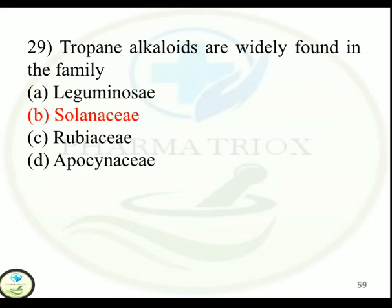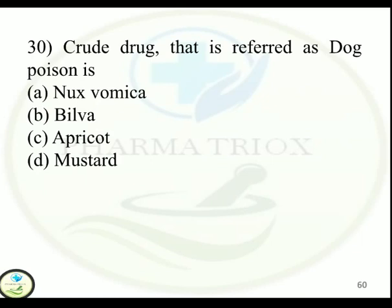Question 30: The crude drug referred to as dog poison is — Option A: Nux vomica. Option B: Bilba. Option C: Apricot. Option D: Mustard. Correct answer is Option A — Nux vomica.